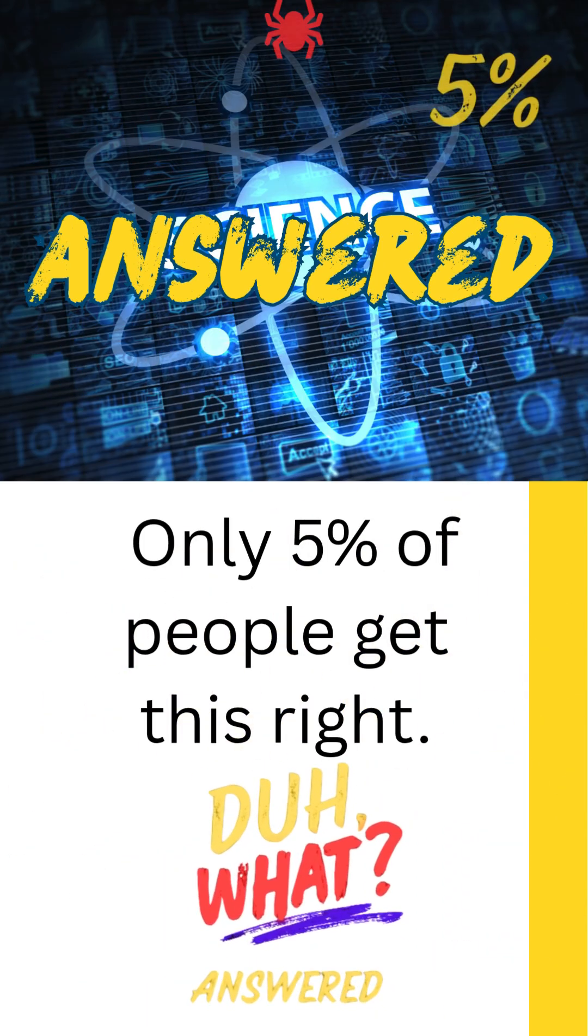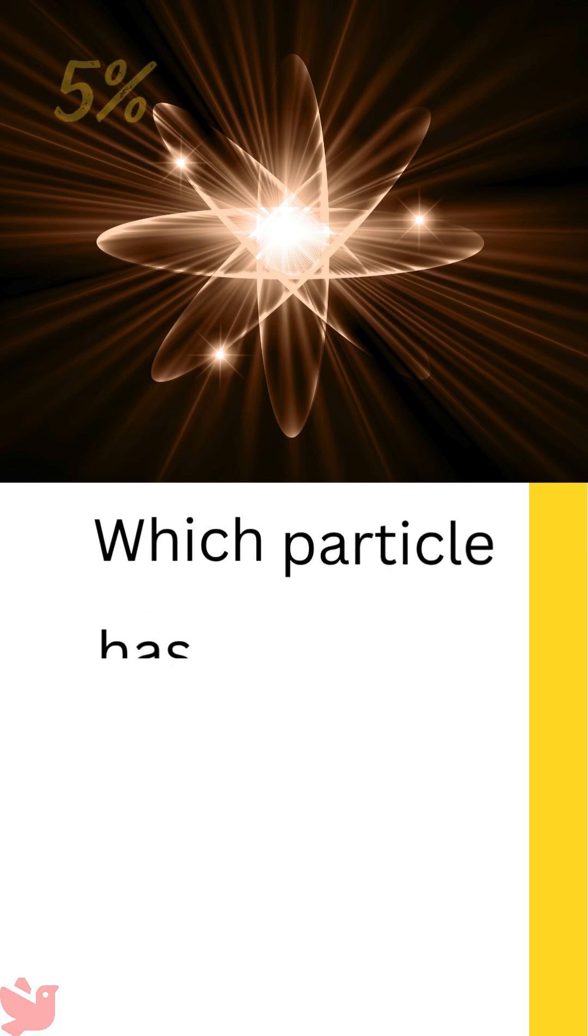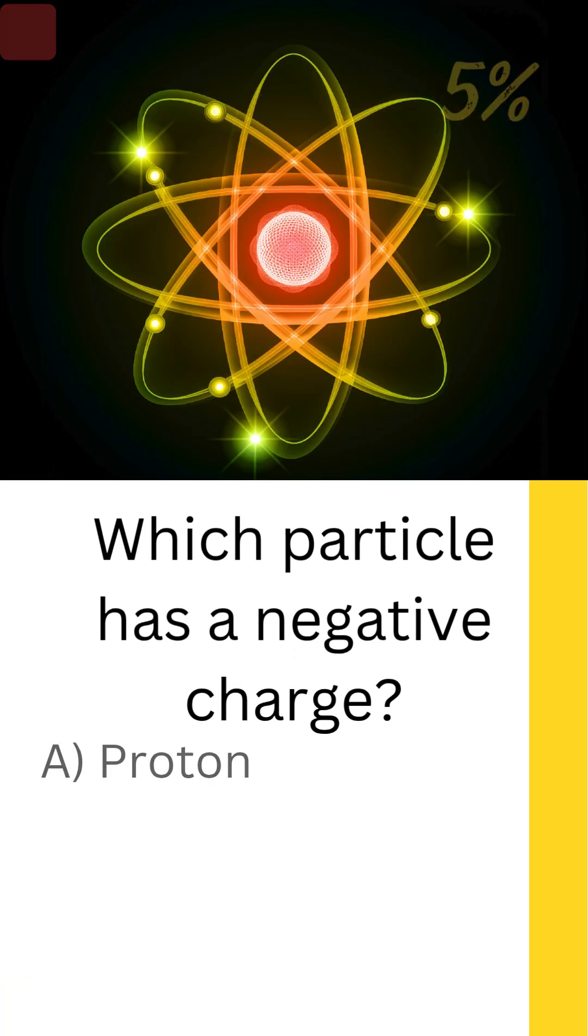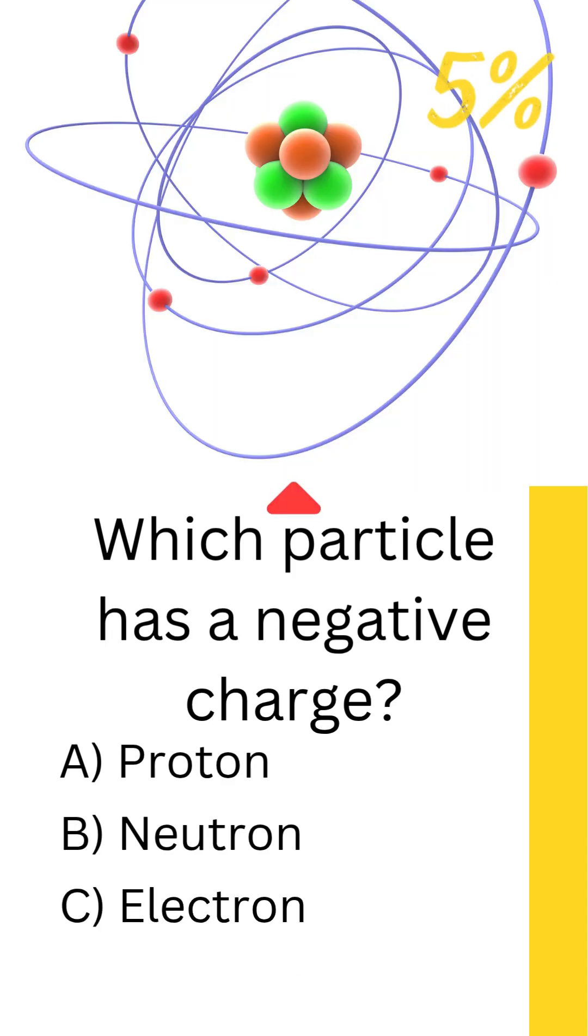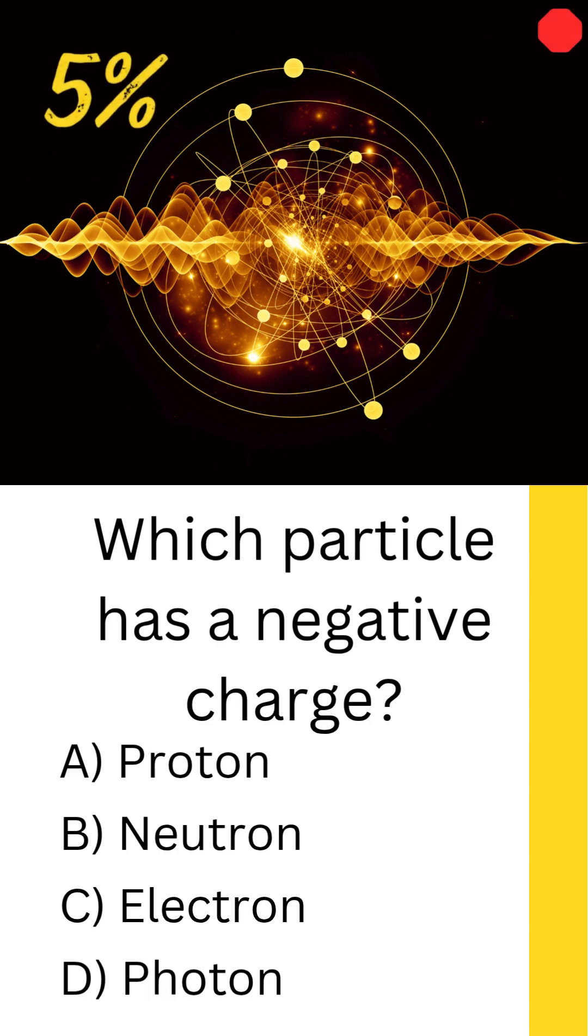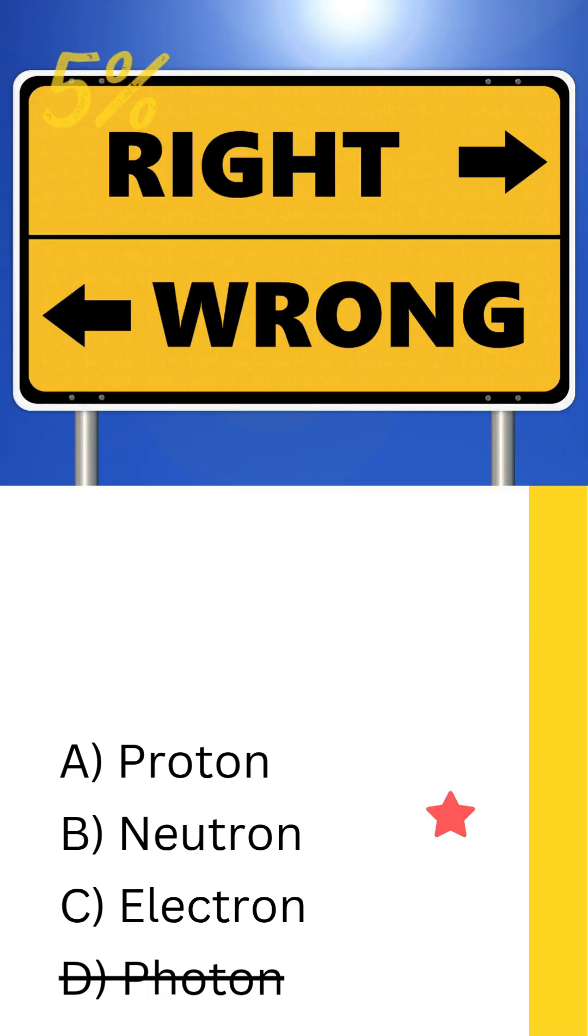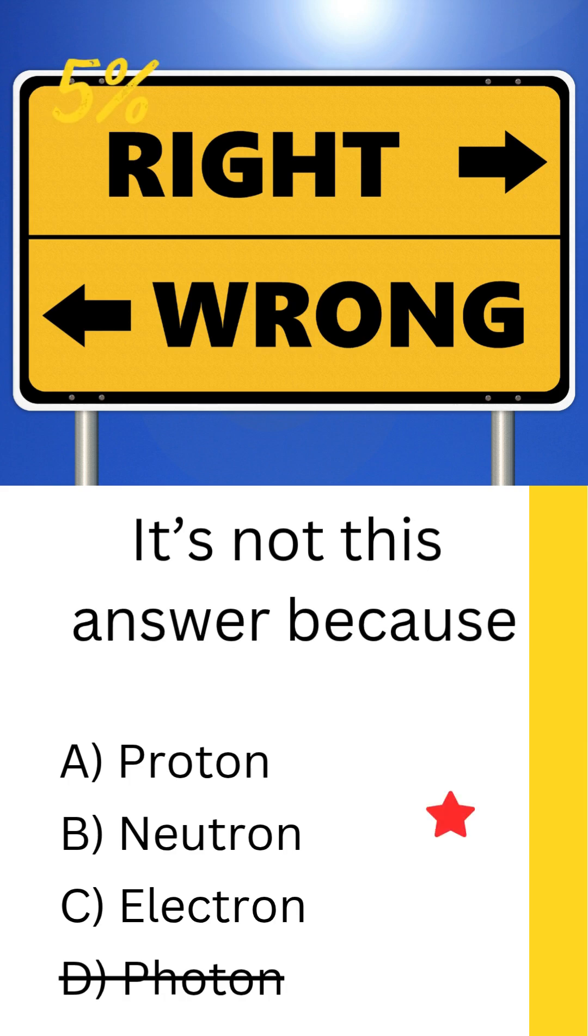Only five percent of people get this right. Which particle has a negative charge? Is it A) a proton, B) a neutron, C) an electron, or D) a photon? Comment your answer below. It's not the photon. Photons are particles